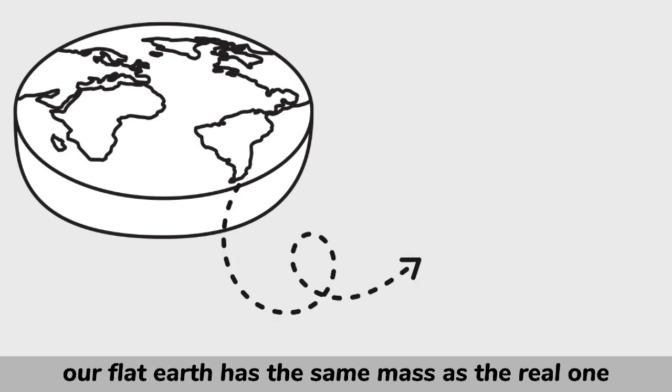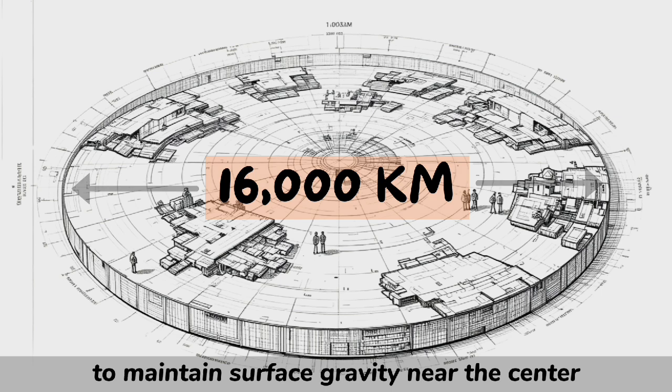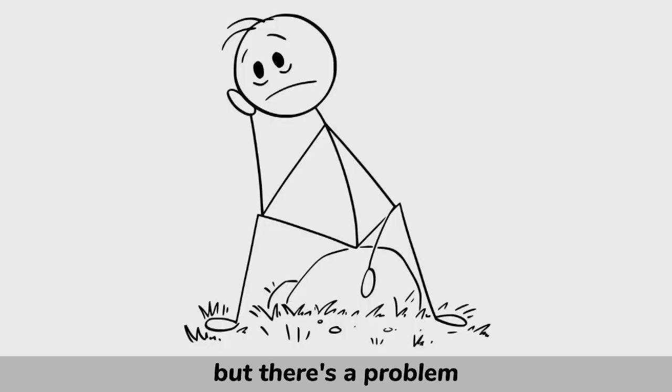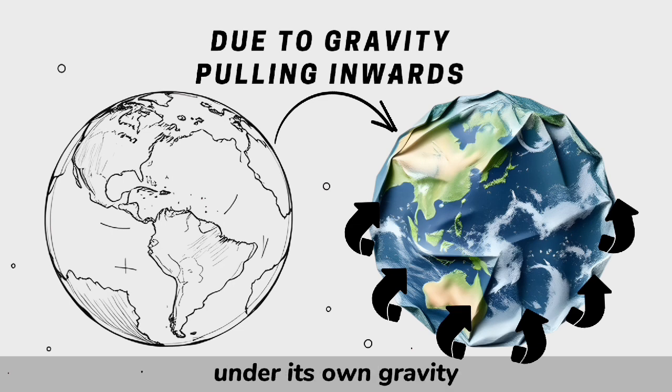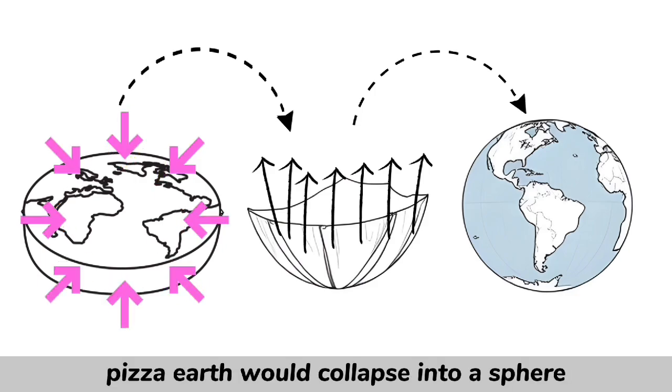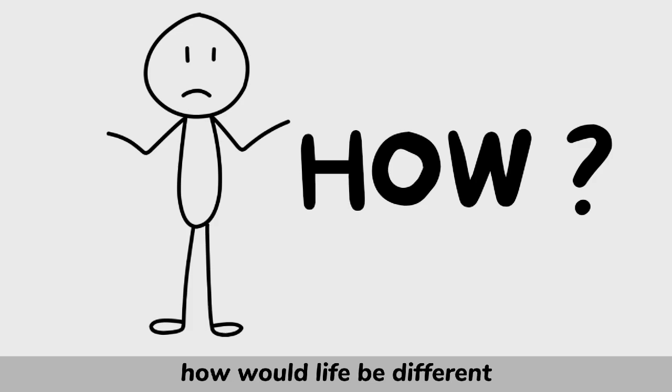Let's assume our flat Earth has the same mass as the real one. That would make it about 16,000 kilometers across to maintain surface gravity near the center. But there's a problem. A thin disk can't hold itself together under its own gravity. The weight of the rock would crush itself, and in just a few million years, pizza Earth would collapse into a sphere. But let's assume some unknown force keeps it flat. How would life be different?